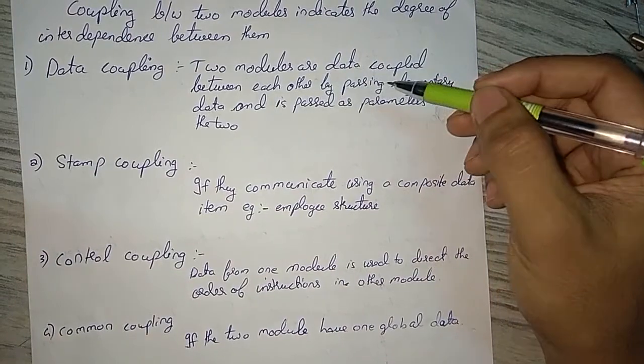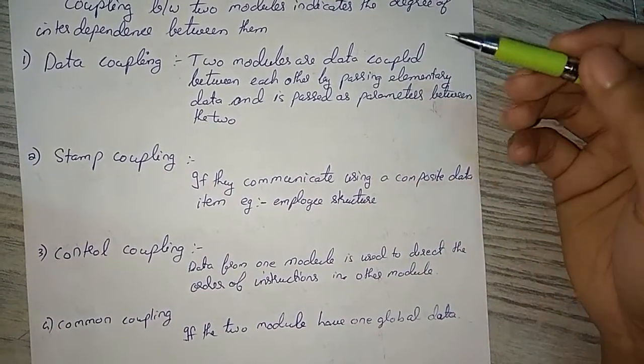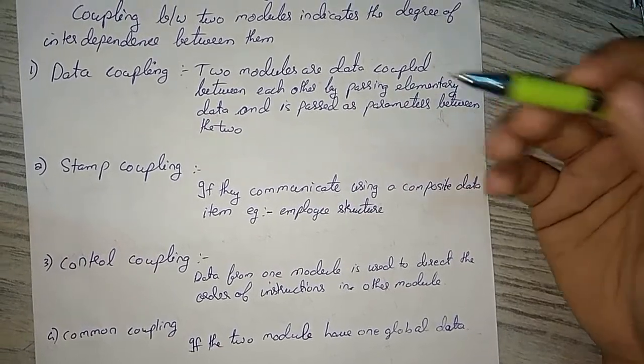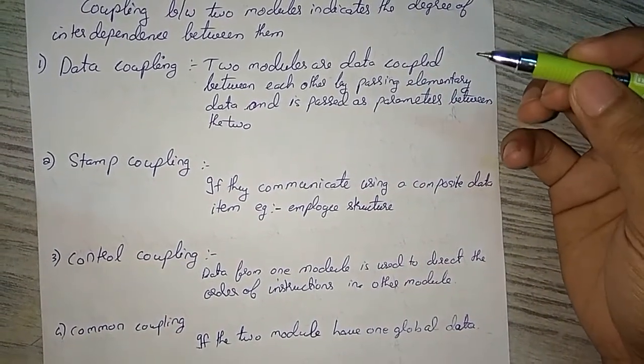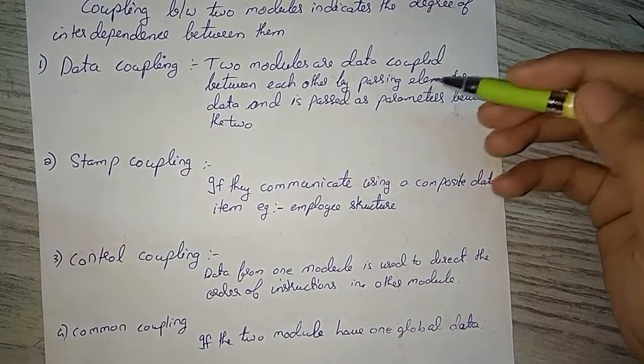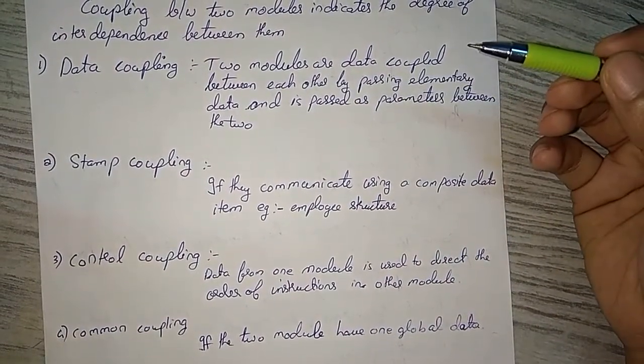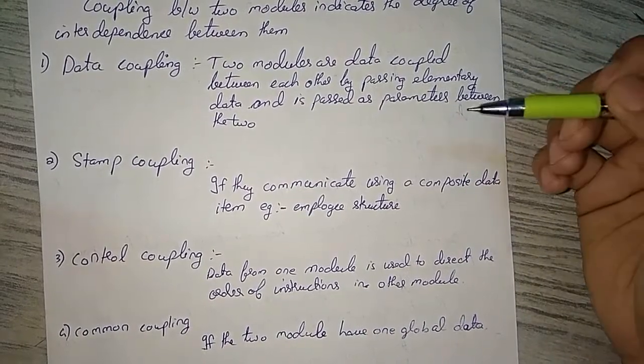They are passing it as parameters, like in Fibonacci search. We are passing the parameters which we have to search, and if it matches, we return it back. So just like that, the data is passed as parameters between the two modules.